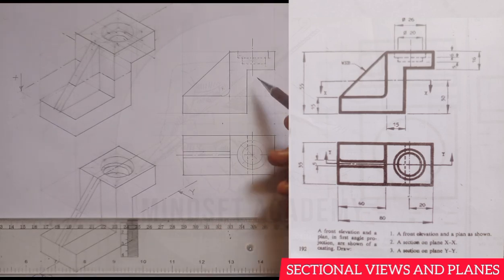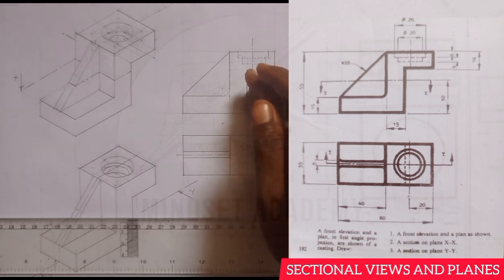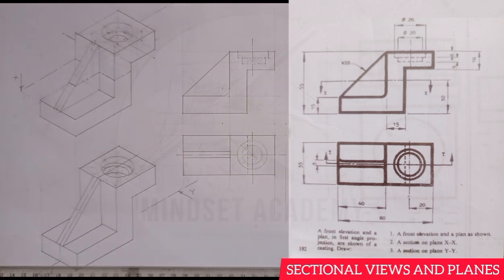We've drawn what is shown on screen — the elevation and plan without sectioning. The next step is to draw the end elevation by applying the sectional planes.